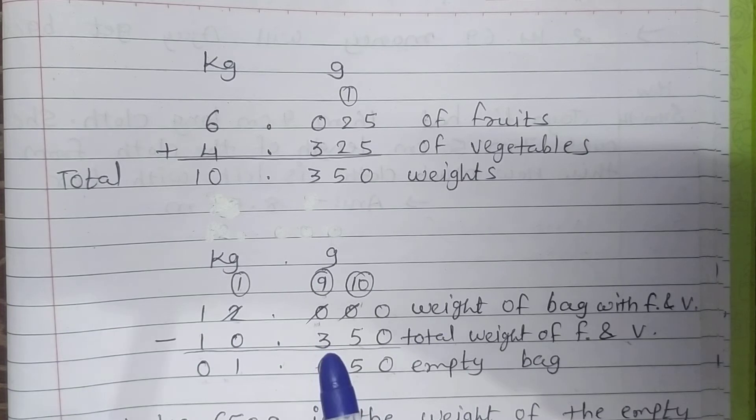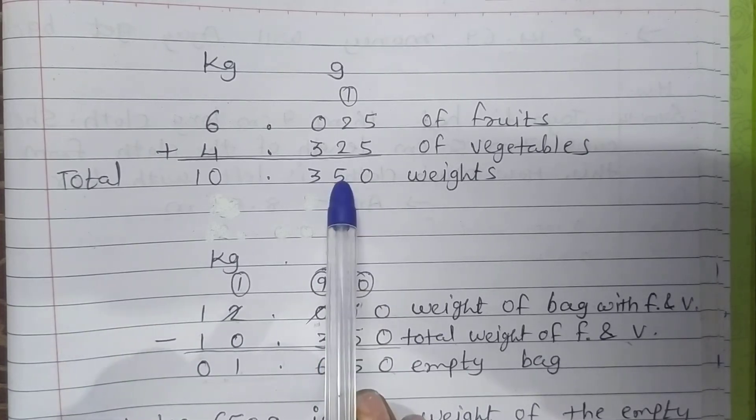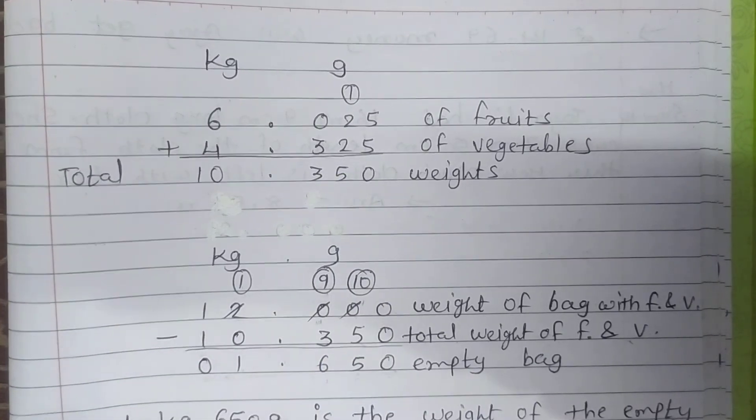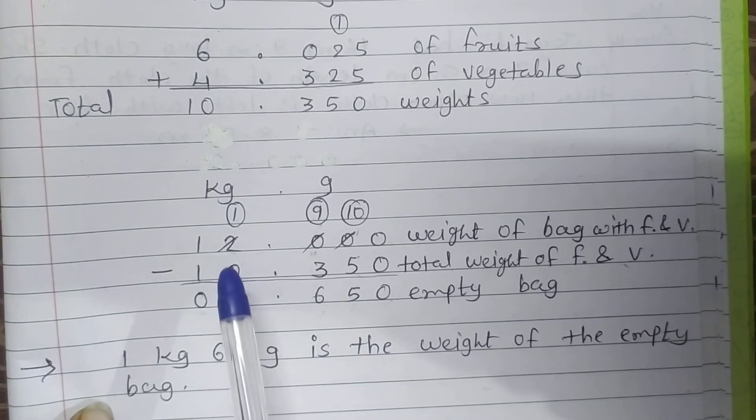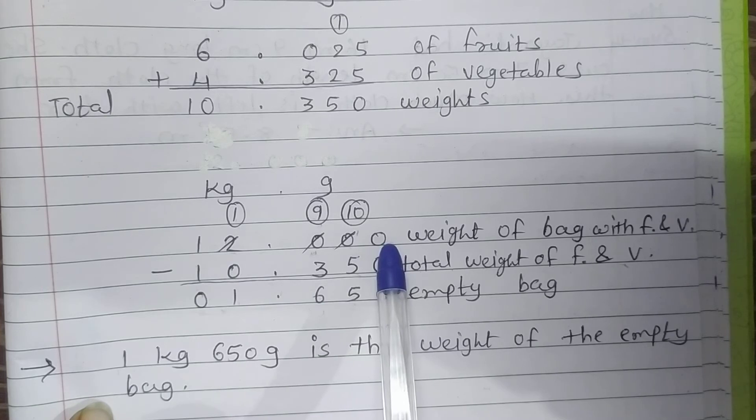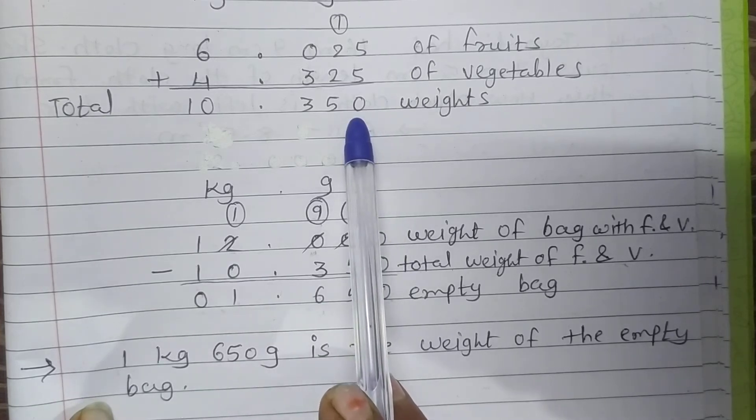Now the total weight of fruit and vegetables is 10.350 kg. Right. Now we will subtract this from total weight of bag.